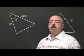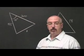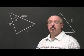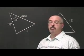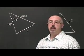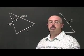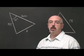Because of this, we need a fifth formula to help us solve these types of triangles. And that formula is called cosine law.